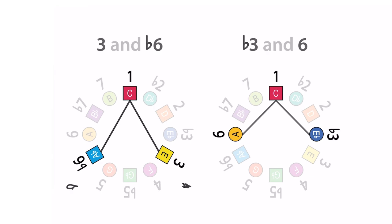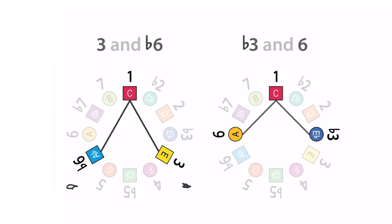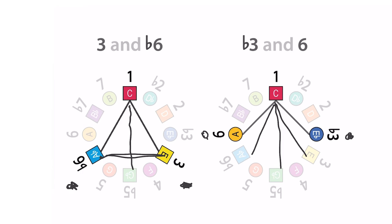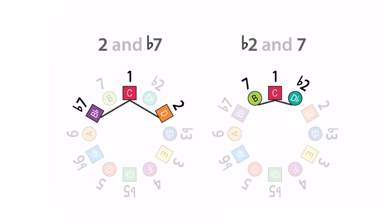On either side of the four and five, flanking those notes, are the three and flat six — again, around our line of symmetry down the middle — and those notes form a triangle. Then in the key of C, down the line of symmetry, flanking the three and flat six on either side, are the flat three and six. Those two notes are also symmetrical, and together with the tritone they form a square. Fanning out even further, we have the two and flat seven, which are whole steps on either side of the tonic, and then the flat two and seven, which are half steps on either side of the tonic.